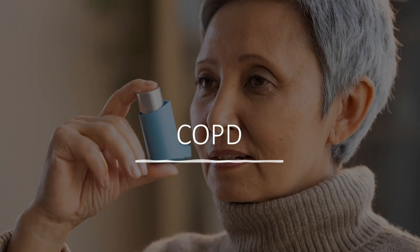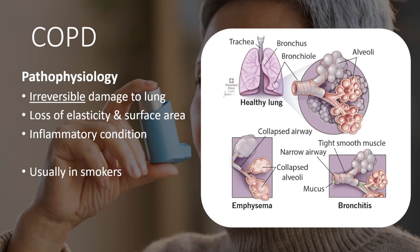Moving on to COPD — it's usually a disease of elderly patients. The pathophysiology is similar but different to asthma; the key difference is that it involves irreversible damage to the lung. We have loss of elasticity and surface area of the alveoli — emphysema — and increased mucus with airway narrowing — bronchitis. This is an inflammatory condition triggered usually by tobacco smoke exposure, causing collapse of alveoli and lower effective lung volume.